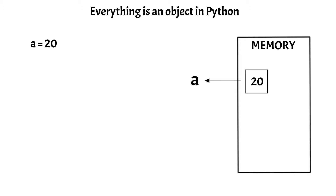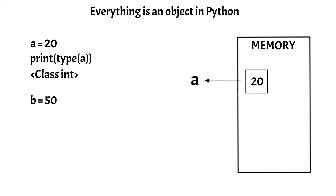So if you print the variable A with the type function, then it will give you an integer object as the output. Similarly, if you store an integer value of 50 in variable B, then again value 50, which is an integer object, will be stored in the memory and it will be referenced to a variable named B. This is how the memory is allocated for the values stored in variables.